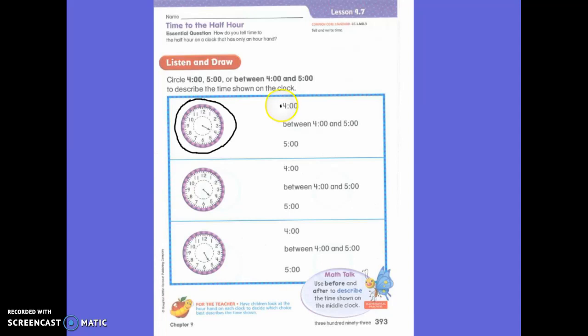And here are my three options. Does this clock show four o'clock? Is the hour hand between the four and the five o'clock? Or is this clock showing five o'clock?